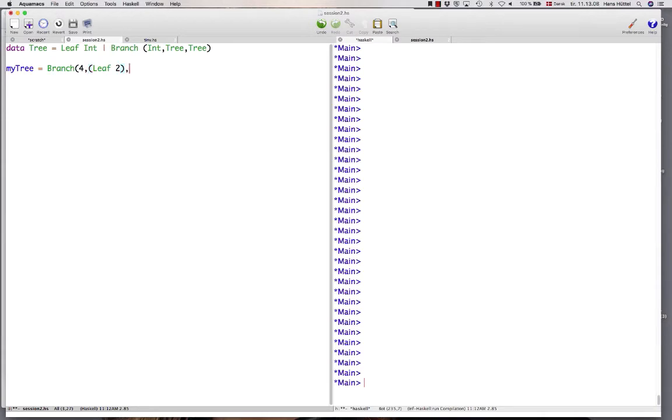And it contains a subtree, which is also a branching tree, which has 3 as its root, and a leaf with 5, and a leaf with 17. Oops, that should be a capital L. A leaf with 17. Here we go.